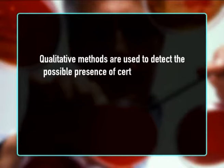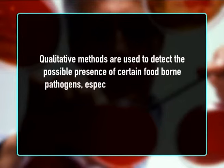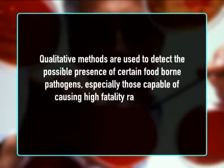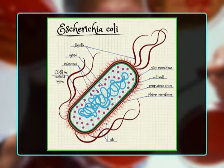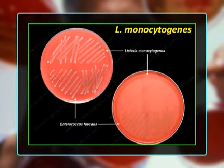Qualitative methods determine whether a representative amount of a food or a certain number of samples in a batch contain a specific microbial species. They are used to detect the possible presence of certain foodborne pathogens, especially those capable of causing high fatality rates among consumers — for example, Salmonella, Clostridium botulinum, E. coli O157:H7, and Listeria monocytogenes in ready-to-eat foods.